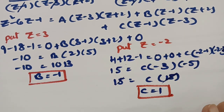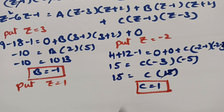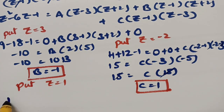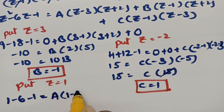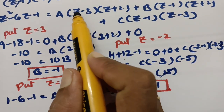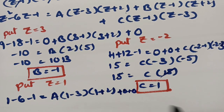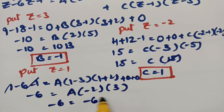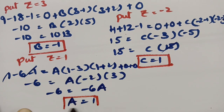Now put z = 1. The B and C terms vanish, leaving 1 − 6 − 1 = A(1−3)(1+2), so −6 = A(−2)(3) = −6A. Therefore A = 1. We have found all three values: A = 1, B = −1, and C = 1.